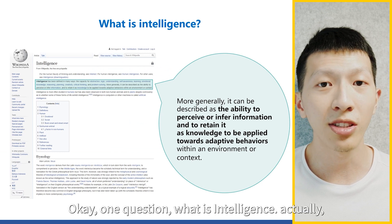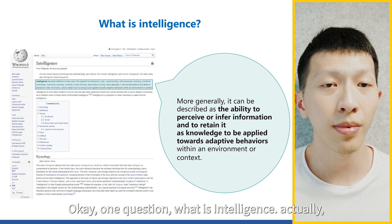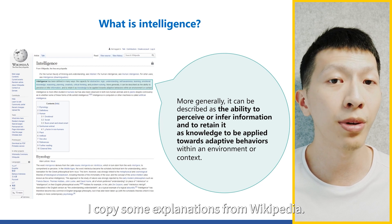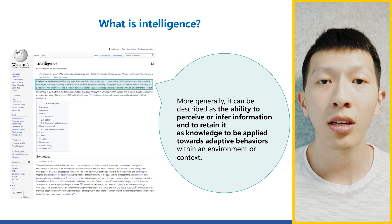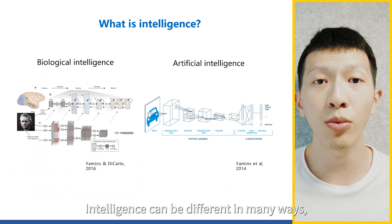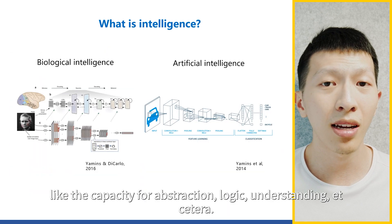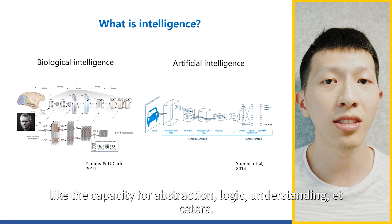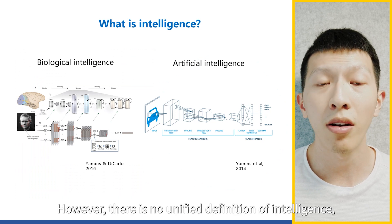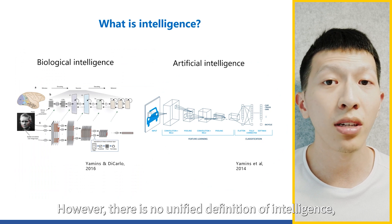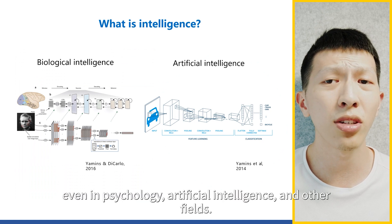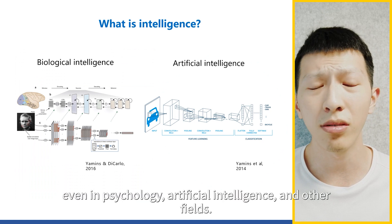One question: what is intelligence? I copied some explanations from Wikipedia. Intelligence can be defined in many ways, like the capacity for abstraction, logic, understanding, etc. However, there is no unified definition of intelligence, even in psychology, artificial intelligence, and other fields.